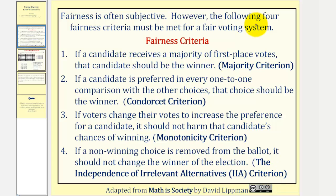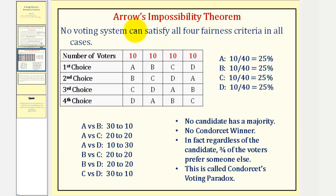So we might be thinking to ourselves: is there a voting system that will satisfy all four of these fairness criteria? This leads us to Arrow's impossibility theorem, which states that no voting system can satisfy all four fairness criteria in all cases.